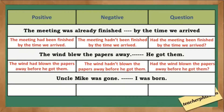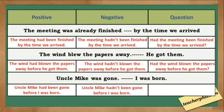Last sentence: Uncle Mike was gone and I was born. Positive statement: Uncle Mike had been gone before I was born. Negative statement: Uncle Mike hadn't been gone before I was born.